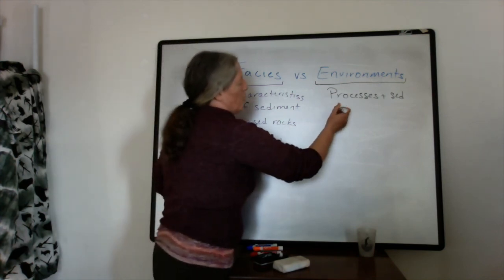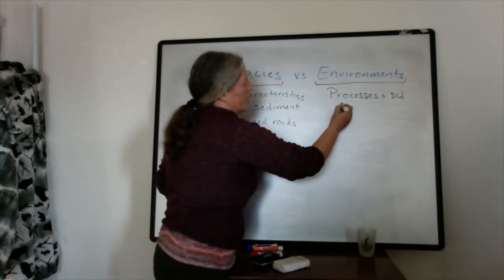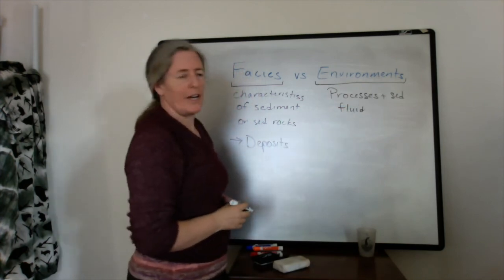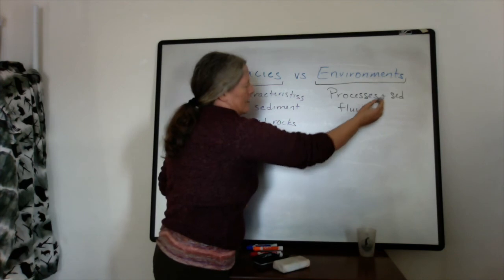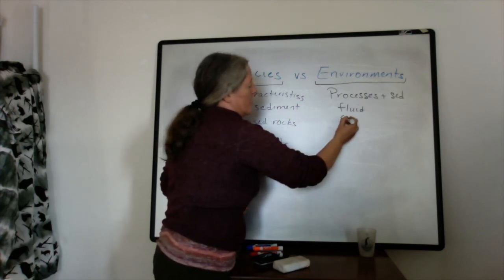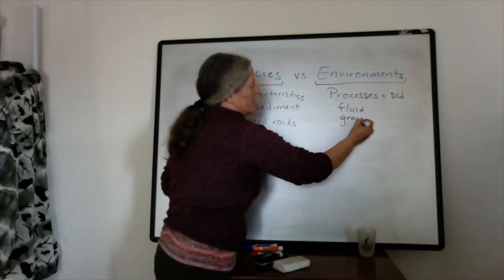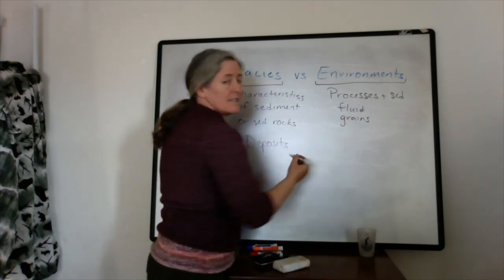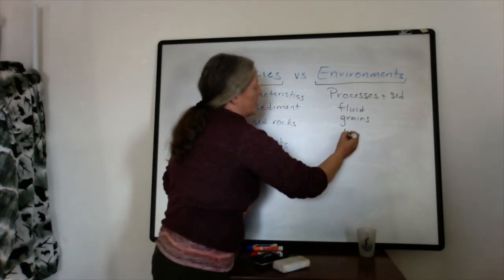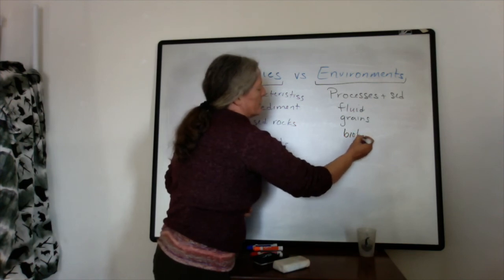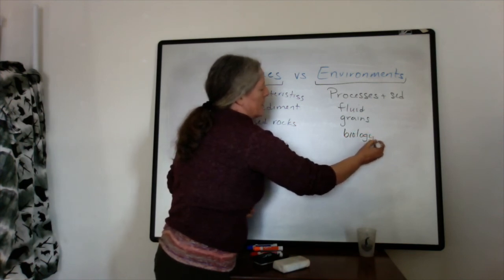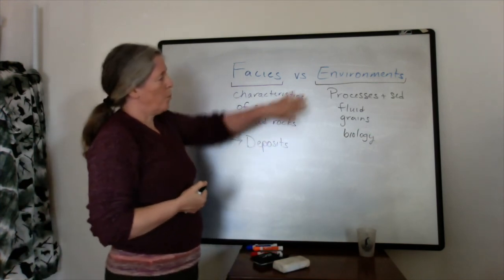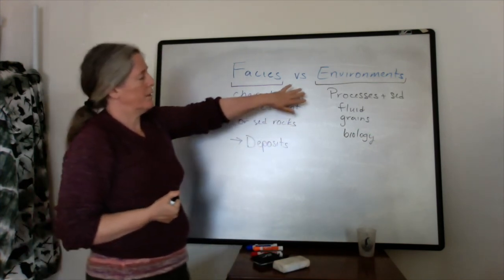Processes would be things like fluid flow—is it water or air? It includes the sediment, so you can have the grains that are present, plants and animals. You can have biological processes. There's a lot more that goes on within an environment